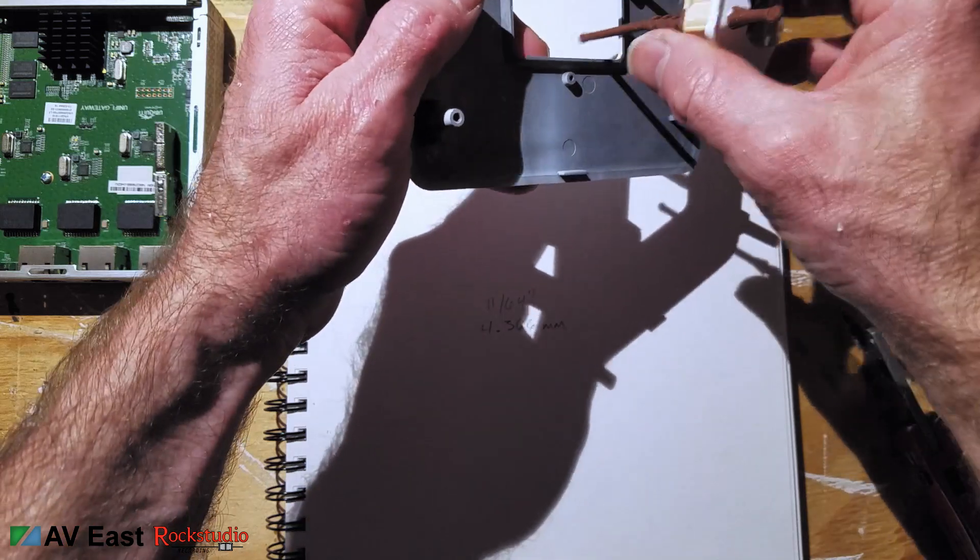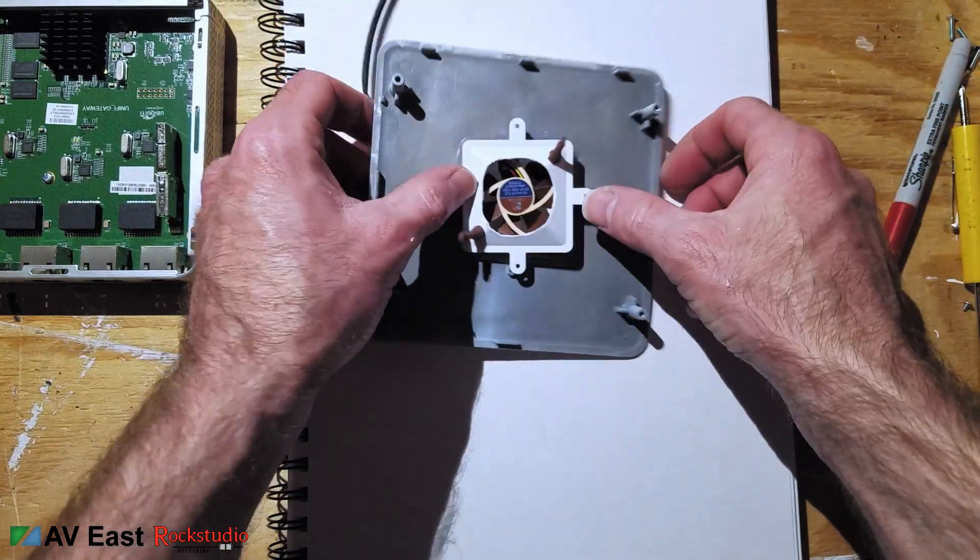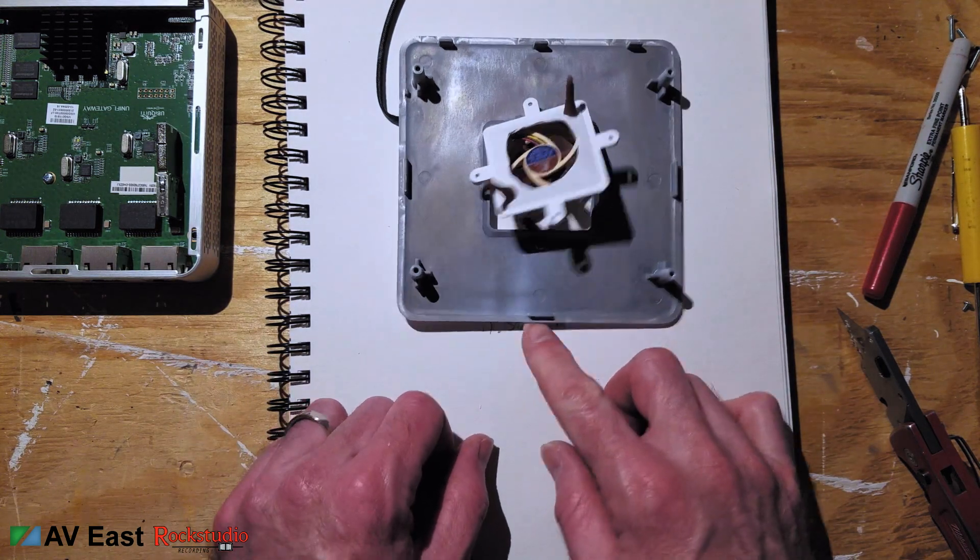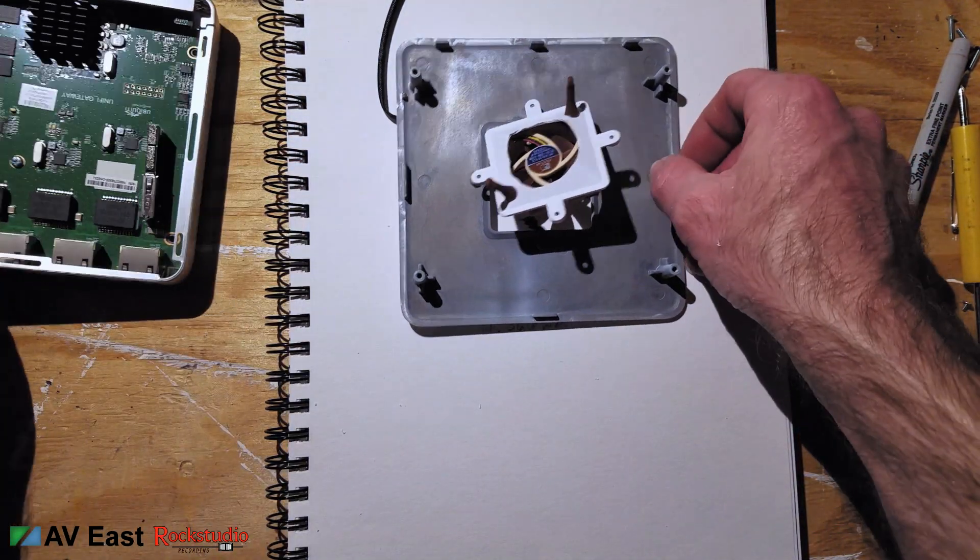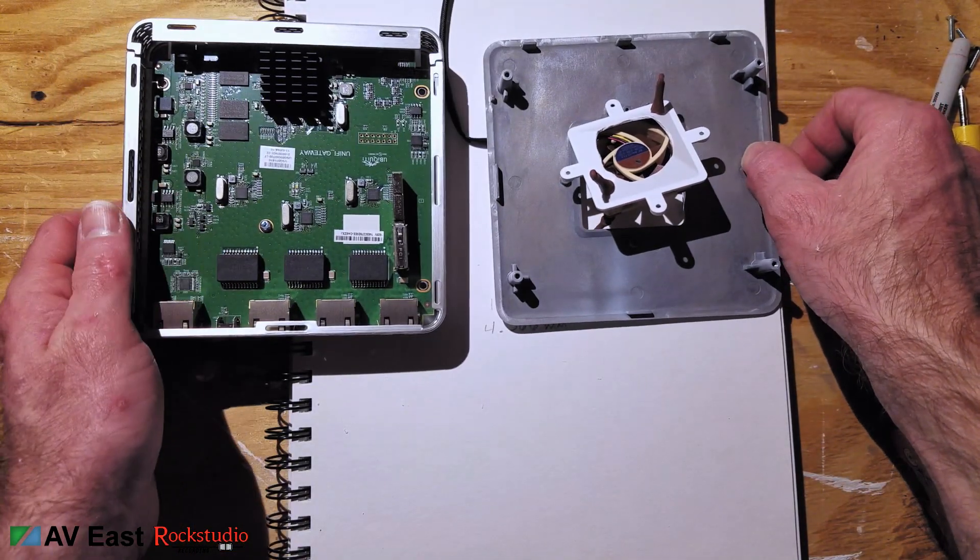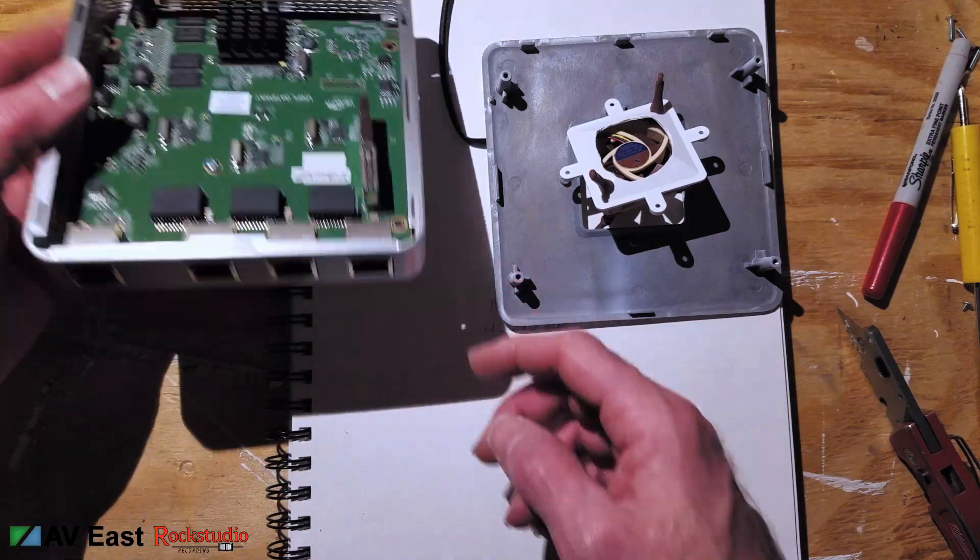Before you screw the fan down note the orientation pins that are on the top plate of the USG. The two on the side are the same width. The one on the front of the USG is wider than the one on the back. So you're going to want the power cord for the fan to come along the backside of the USG. So just make note of that before you screw it down.